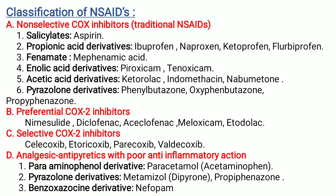Classification of non-steroidal anti-inflammatory drugs has four main categories. First are non-selective COX inhibitors, traditional NSAIDs. These include: salicylates (e.g., aspirin); propionic acid derivatives (e.g., ibuprofen, naproxen, ketoprofen, flurbiprofen); phenamates (e.g., mefenamic acid); enolic acid derivatives (e.g., piroxicam, tenoxicam); acetic acid derivatives (e.g., ketorolac, indomethacin, nabumetone); and pyrazolone derivatives (e.g., phenylbutazone, oxyphenbutazone, propifenazone).